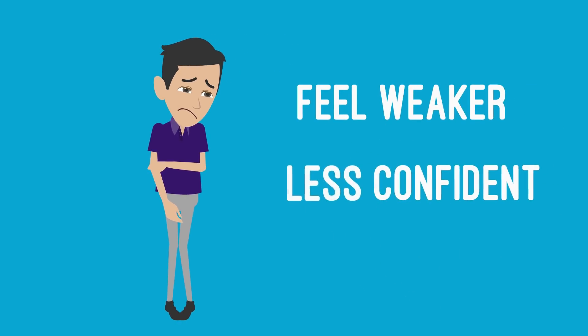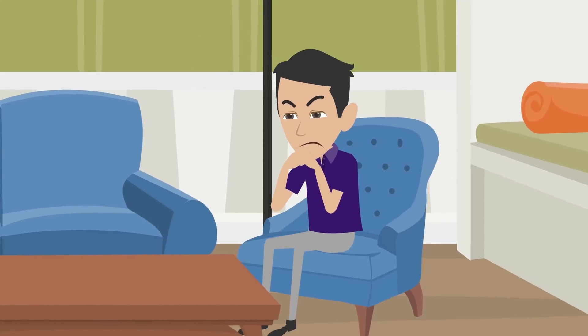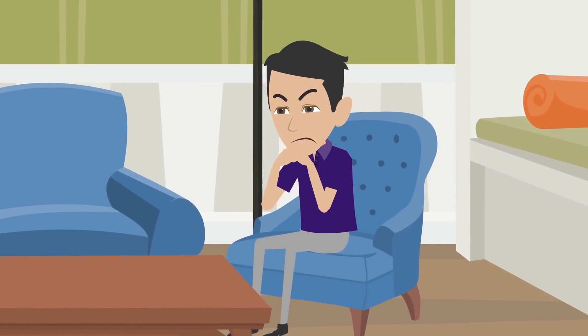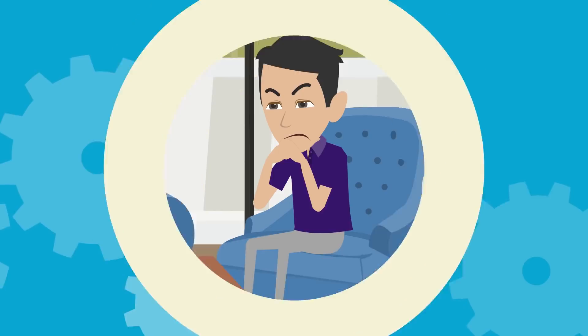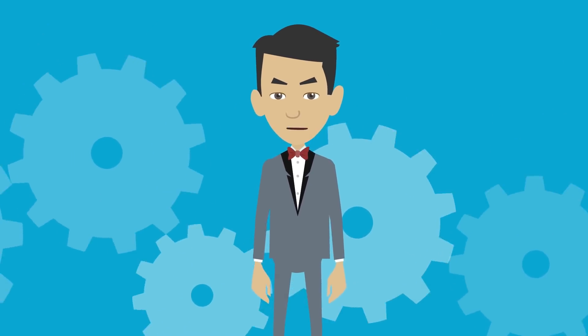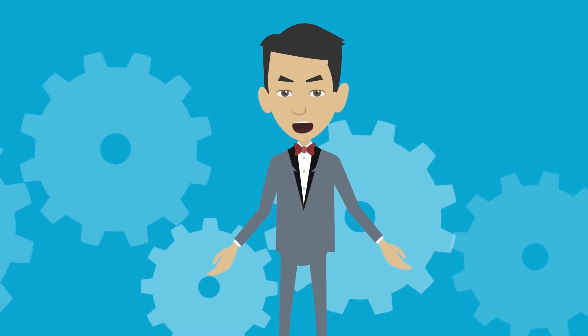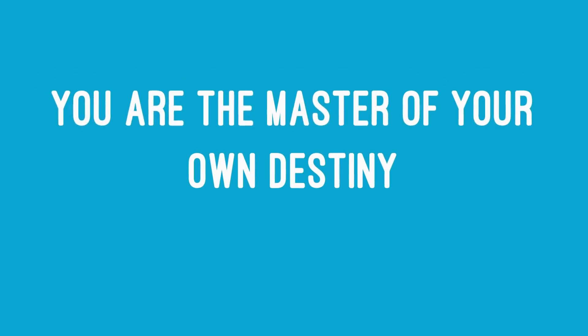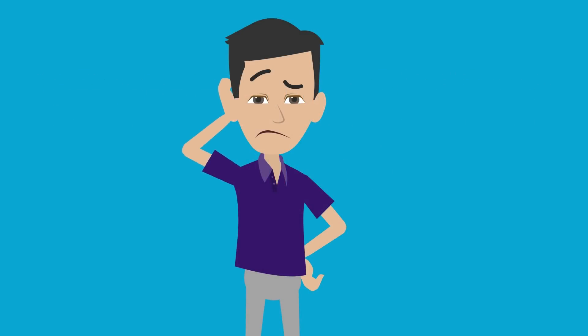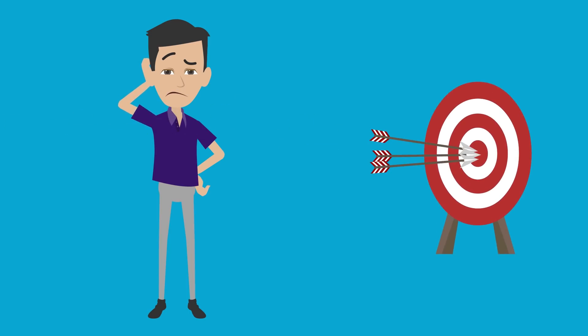When you give someone the power to make you happy through their words and their actions towards you, you also give them the power to make you unhappy by doing the opposite. In an ideal life, only you can decide how happy you get to be, and no one else gets to determine when you are happy and for how long you stay that way.